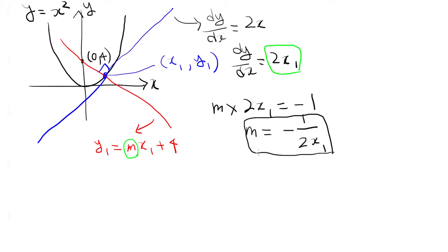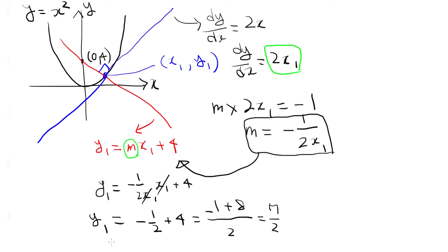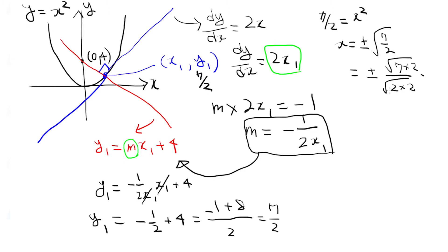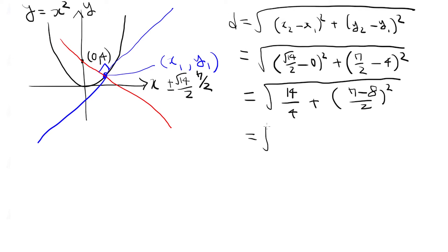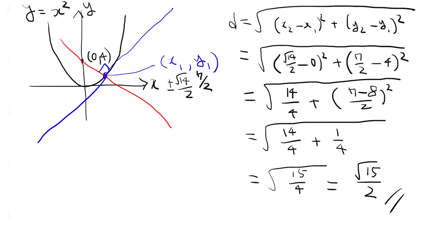Let's plug this value into the equation of the red line. So now we know that y sub 1 is 7 over 2. To find the x-coordinate, let's substitute this value of y into the equation of the parabola, giving x equals plus or minus root 14 over 2. Now that we know the coordinates of the point, let's calculate the distance using the distance formula. The distance between these points is root 15 over 2.